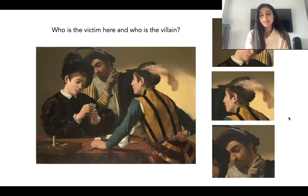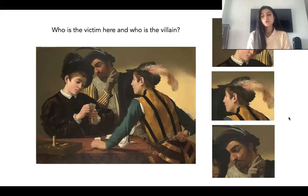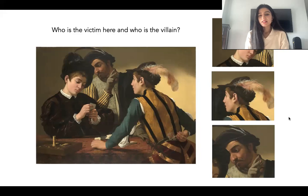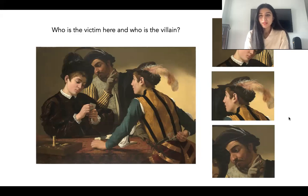It would seem that the young boy on the left side is the victim and the boy on the right side wearing the yellow vest is the villain. A card sharp is someone who is skilled at tricking people at cards on the street to steal their money. The boy on the left is obviously wealthy based on his clothes and hat, and he's obviously not very street smart because he's being tricked by this card sharp and his accomplice — the old man behind him telling him which cards he has. These are clearly street urchins because their gloves have holes in them and their clothes have rips in them, so it's clear they're not well-to-do people. But the boy on the left is just learning a very expensive but valuable lesson in street smarts.